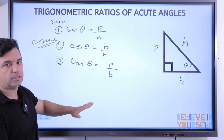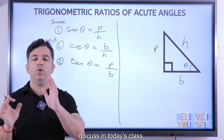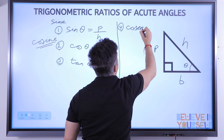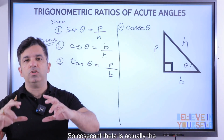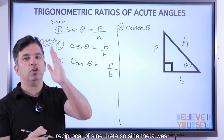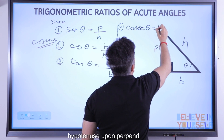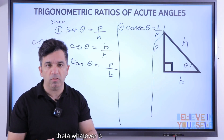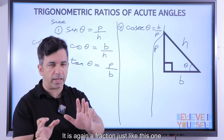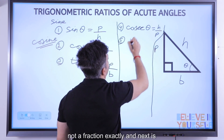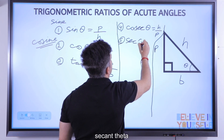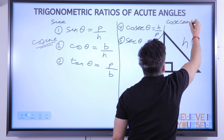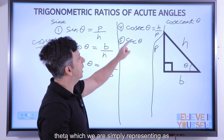The first new term we are going to discuss today is cosecant theta. Cosecant theta is actually the reciprocal of sine theta. Since sine theta was perpendicular upon hypotenuse, cosecant theta equals hypotenuse upon perpendicular. It is simply the reciprocal of sine theta — whatever the value of sine theta, cosecant theta is its reciprocal. We write the full form as cosecant theta, and the short form is cosec theta.